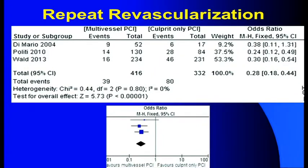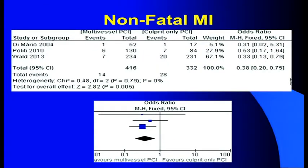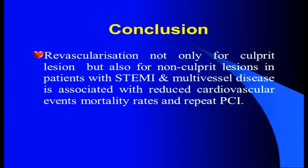Similarly, repeat revascularization is less in patients who undergo preventive PCI in this meta-analysis, as is non-fatal myocardial infarction. Therefore, in conclusion, today we have evidence from two major trials and meta-analysis that revascularization of the non-culprit lesion in addition to culprit vessel angioplasty is associated with reduced cardiovascular mortality, reduced repeat PCI, and therefore is the treatment of choice with experience.